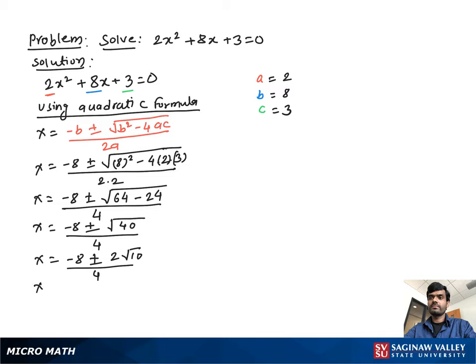Then, we can write x equal to negative 8 plus minus square root of 40 as 2 times square root 10 over 4. Now, as you see, there is 2 as common. So, we take 2 as common outside and we get negative 4 plus minus square root 10 over 2. As you see, 2 divided by 4 is 1 over 2.